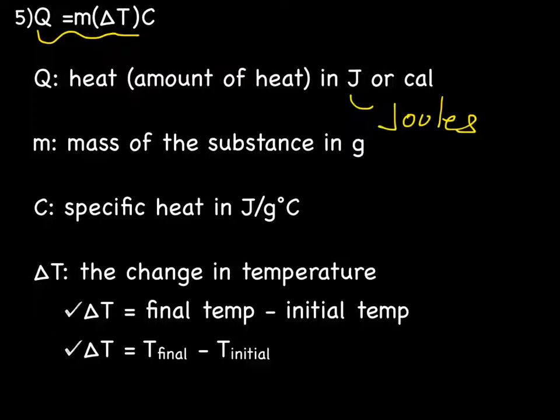C is the specific heat in joules per gram degrees Celsius or it could also be calories per gram degrees Celsius. And delta T is the change in temperature, which you calculate by taking the final temperature minus the initial temperature. You normally write that as T final minus T initial.